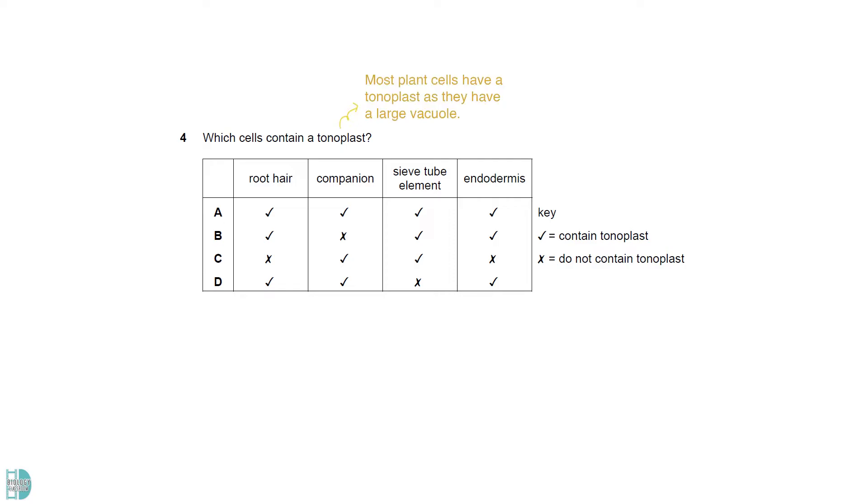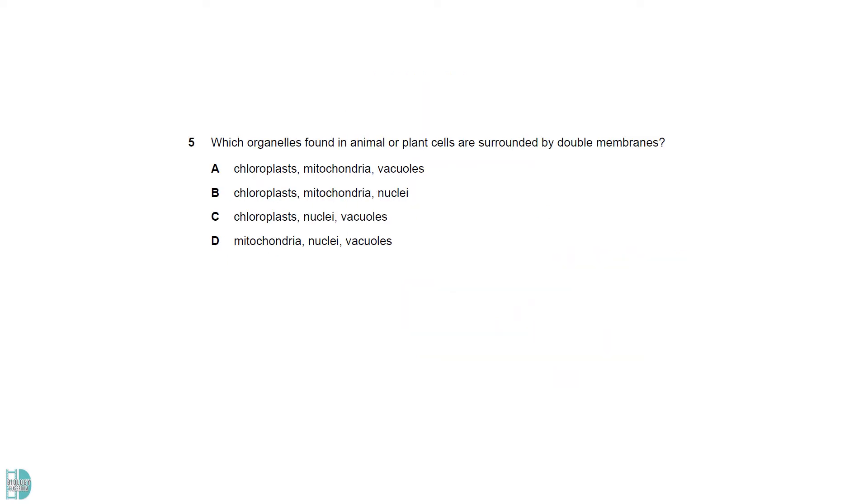Most plant cells have a tonoplast as they have a large vacuole. The sieve tube element is the only one in the options without a vacuole and tonoplast, as it has peripheral cytoplasm. Chloroplasts, mitochondria, and nuclei are surrounded by double membranes. Plant vacuoles are only surrounded by a single membrane, the tonoplast.